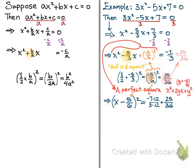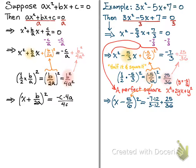In the general case, we take b over a, halve it, and square it. We write it in factored form as (b over 2a) squared when adding to the left-hand side, and in multiplied-out form as b squared over 4a squared when adding to the right-hand side. This implies that (x plus b over 2a) squared equals negative c times 4a over 4a squared plus b squared over 4a squared — finding a common denominator of 4a squared.